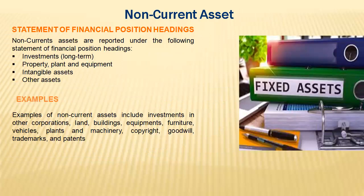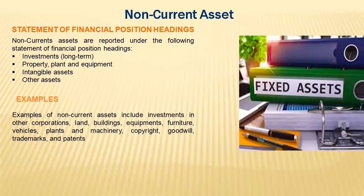Non-current assets normally appear under the statement of financial position. In a typical set of final accounts, we have the statement of financial position, the comprehensive income statement, the statement of cash flows, and the statement of changes in equity. In the statement of financial position, you will find non-current assets in the form of investments that last more than one period, property, plant and equipment — physical assets such as buildings, cars, and land — and intangible assets.